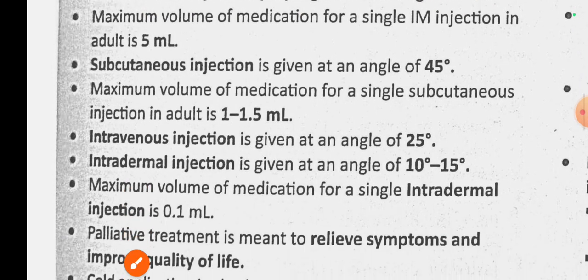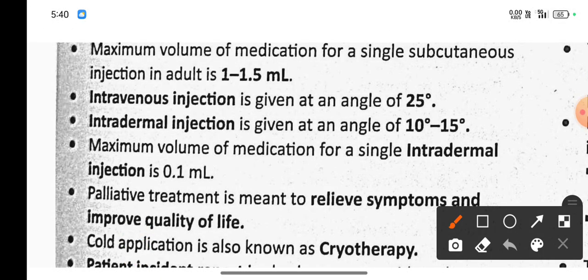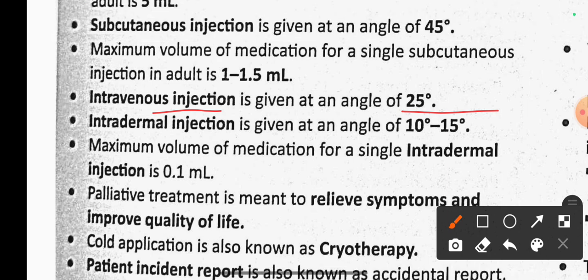Intravenous injection is given at a 25-degree angle. Intradermal injection is given at a 10 to 15 degree angle, and the maximum volume of medication for an intradermal injection is 0.1 ml.